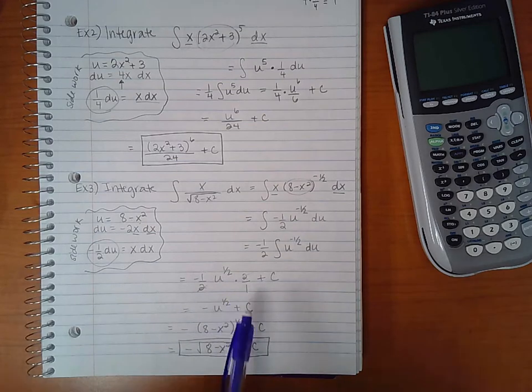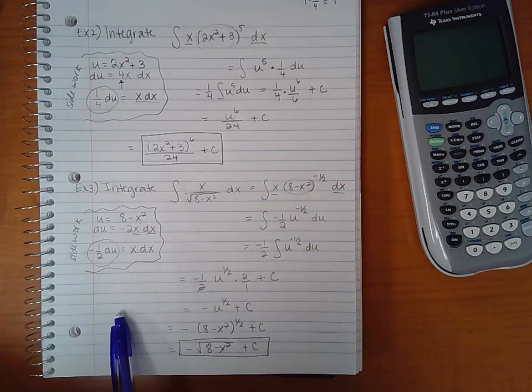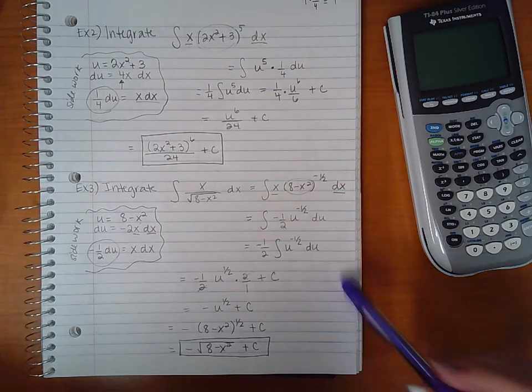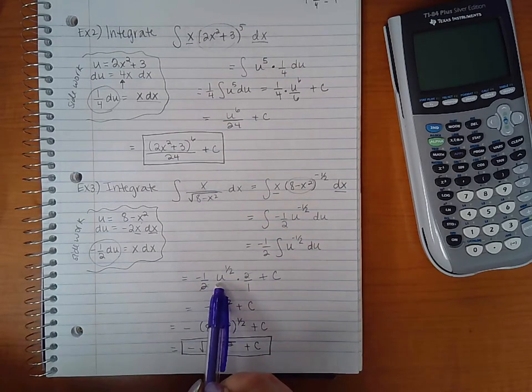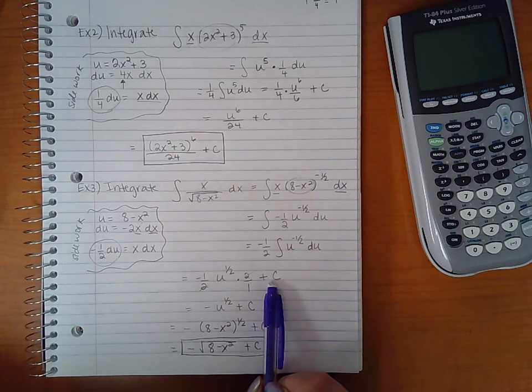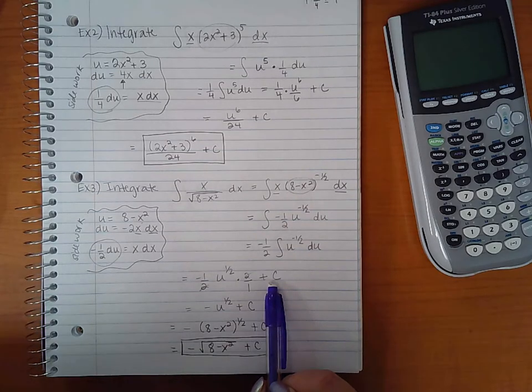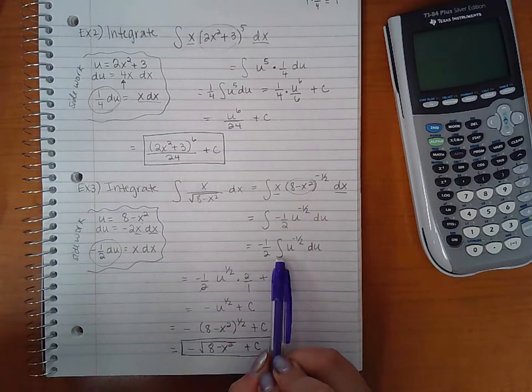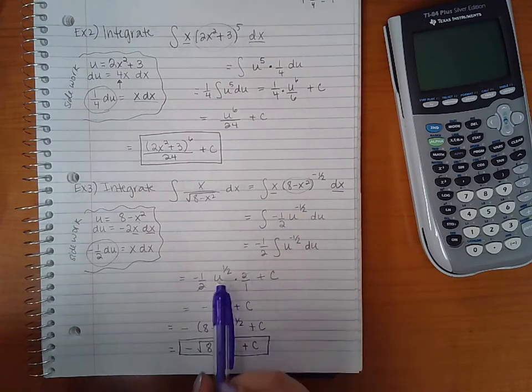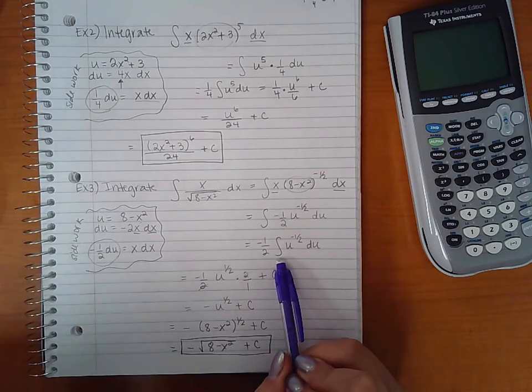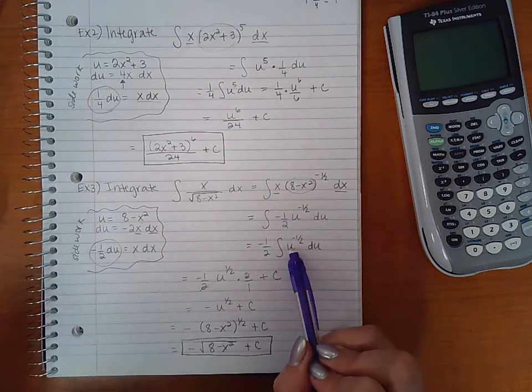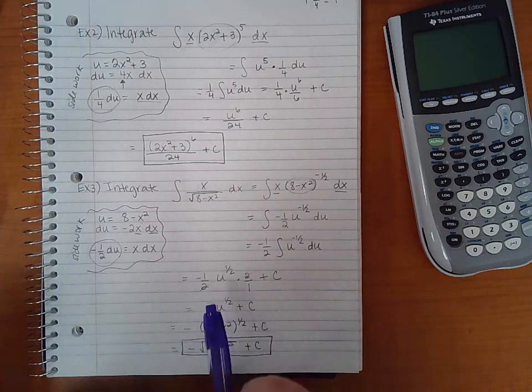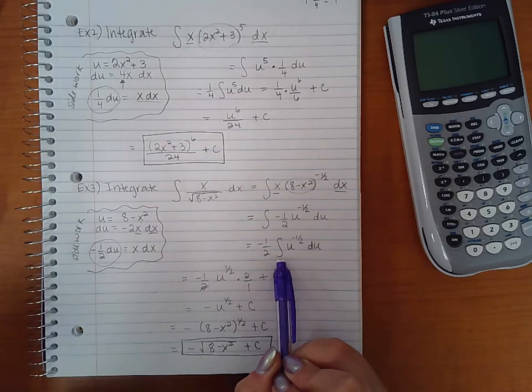Another thing that you need to be careful with when you're showing your work on, say, a test is that when you take the integral, as soon as you've applied the integration rule, you must write the plus c. On top of that, once you've taken the integral and you've applied the integration rule, do not continue writing this integral symbol. That's to tell you, take the integral. But once you've done that, you don't need this symbol anymore.